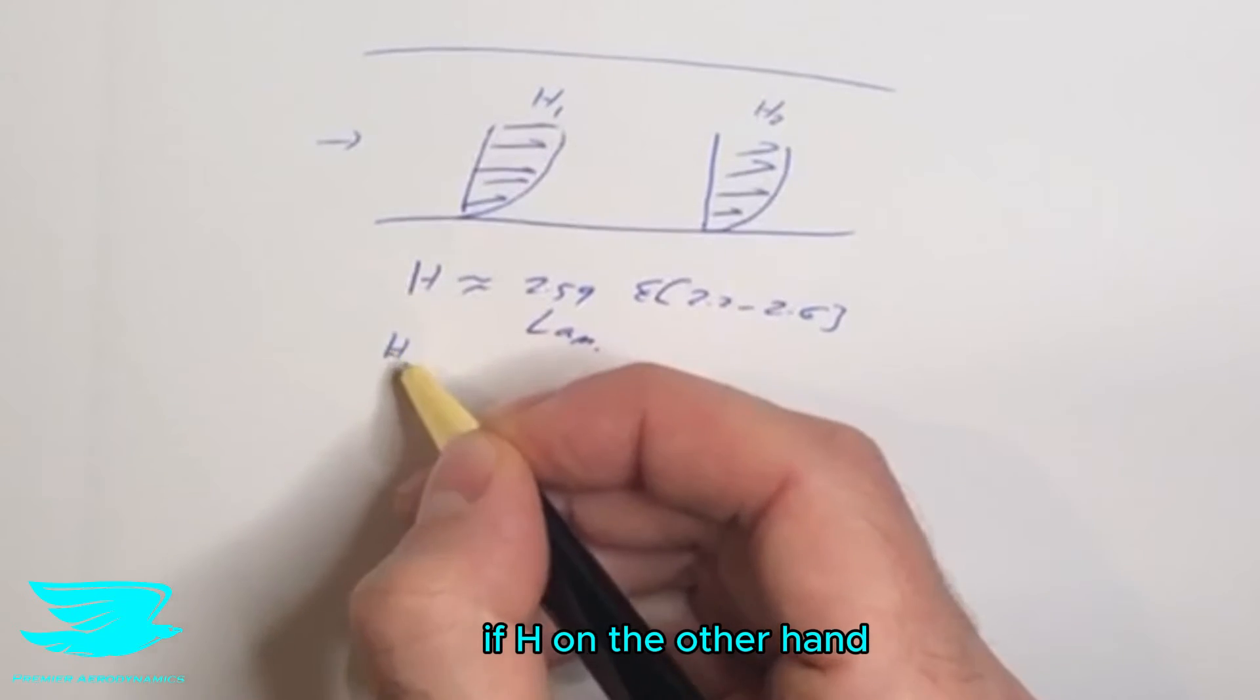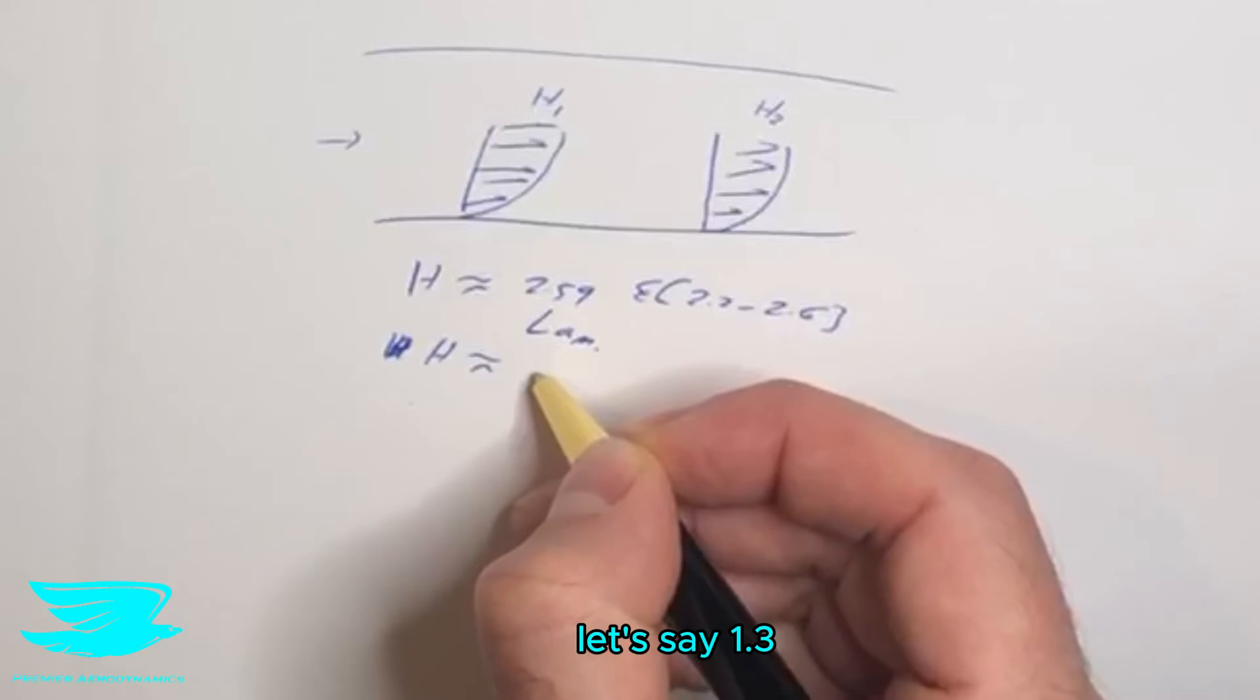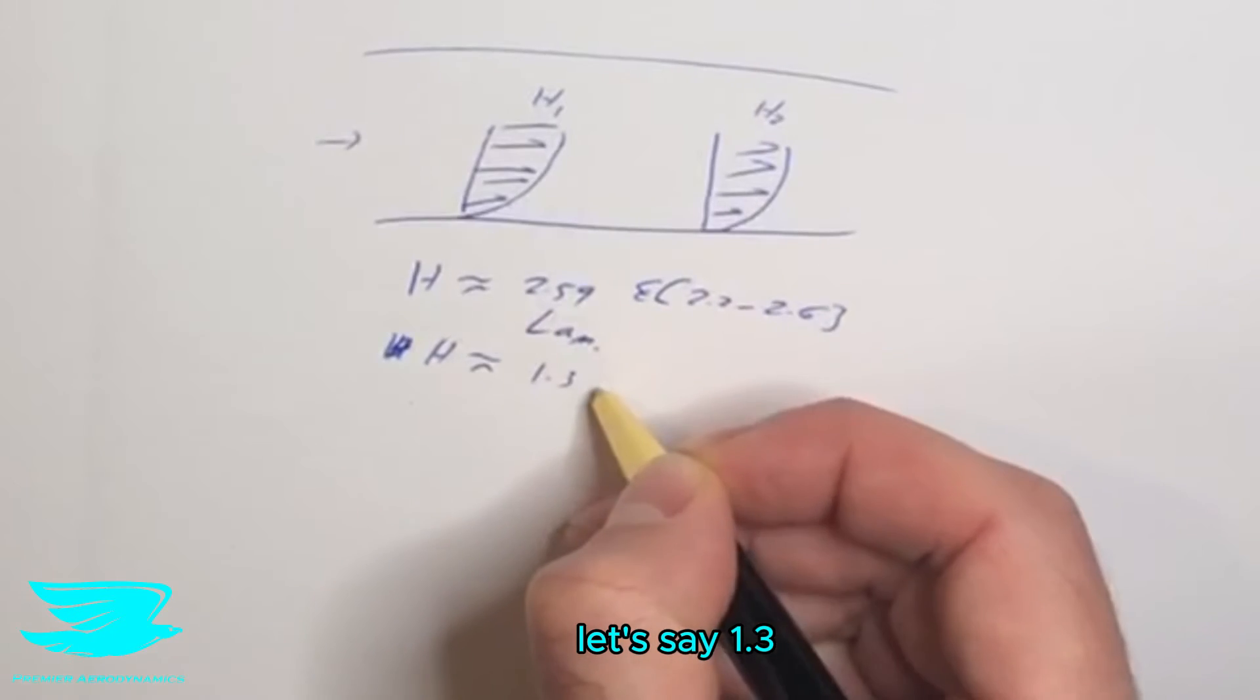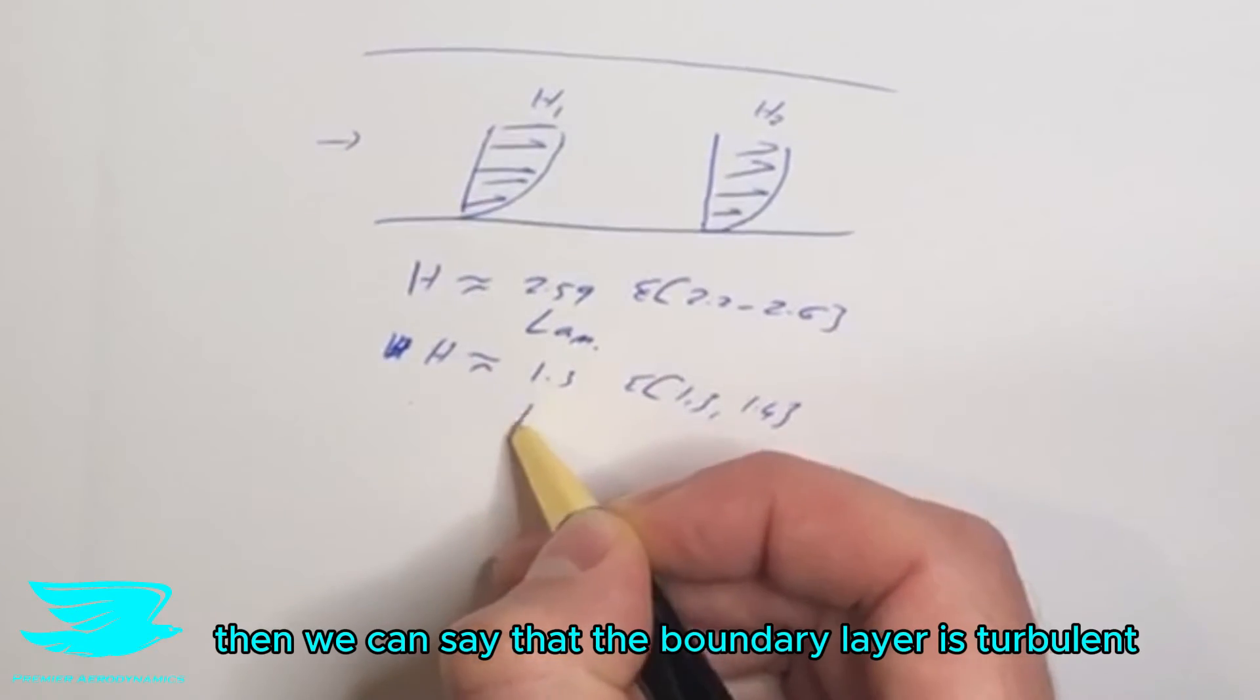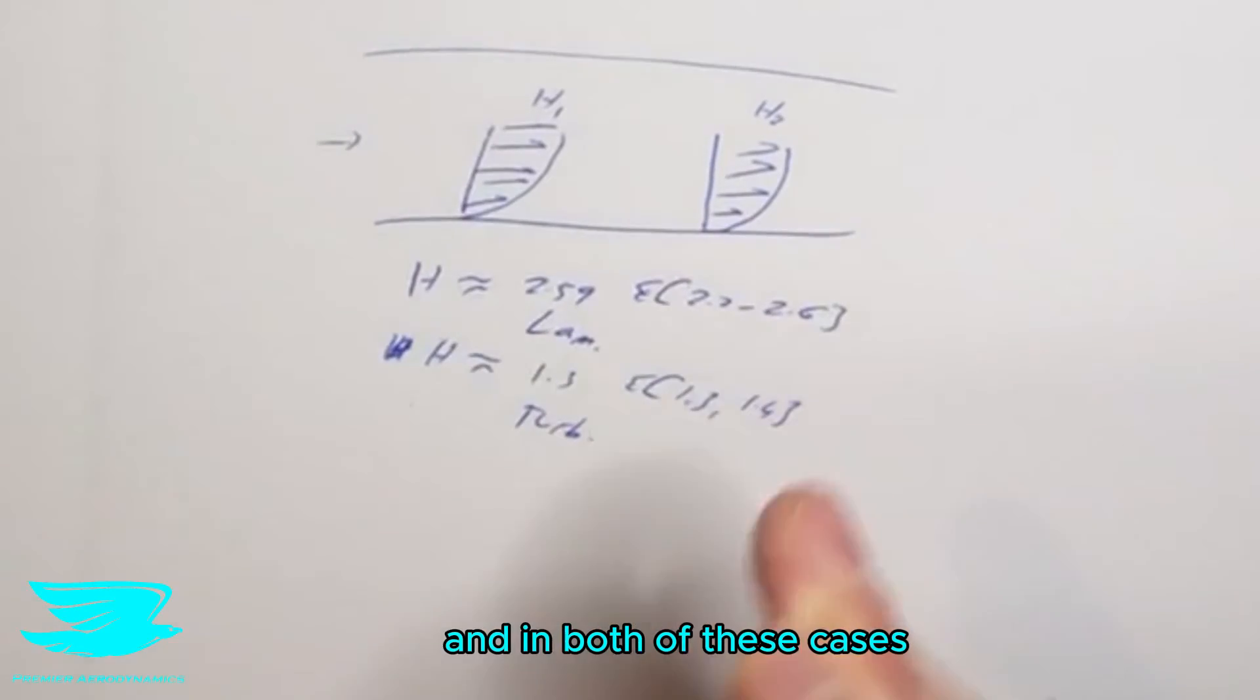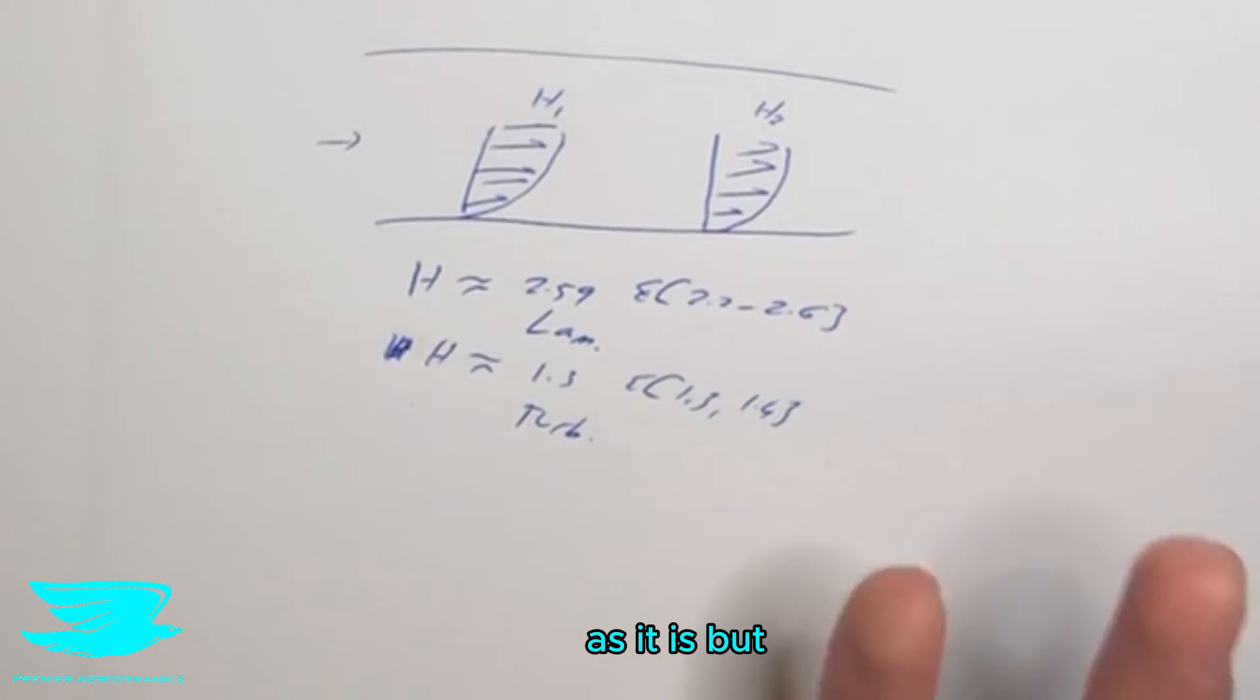If H, on the other hand, is approximately, let's say, 1.3, and let's say between 1.3 to 1.4, then we can say that the boundary layer is turbulent. And in both of these cases, the boundary layer has really no chance of separating as it is.